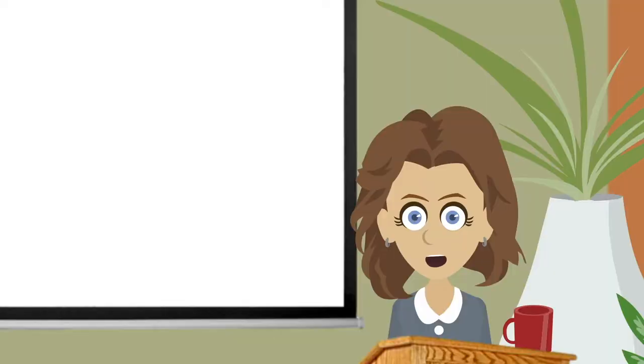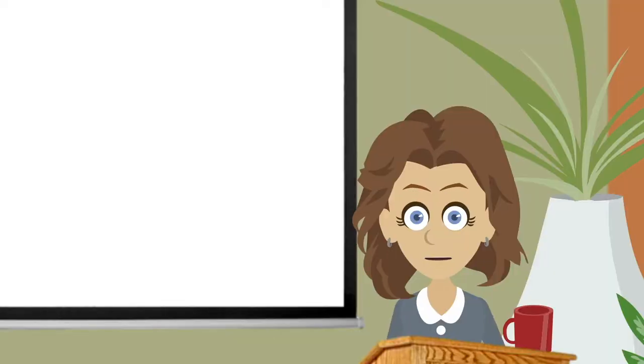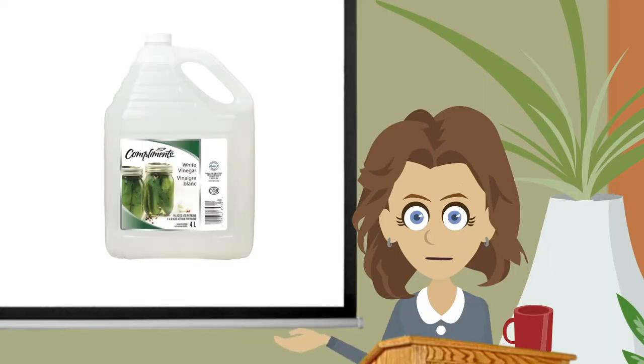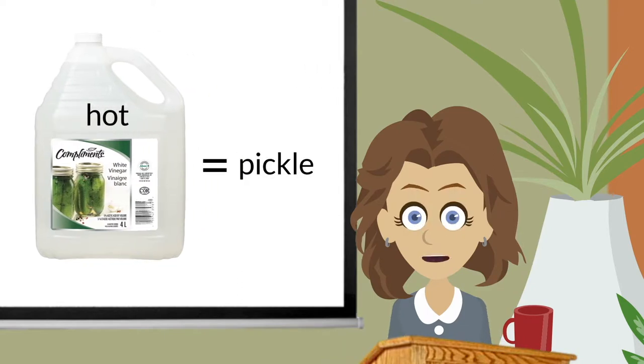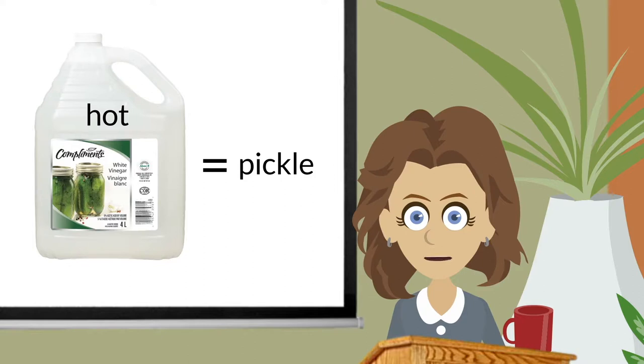Pickling? In the olden days, metalsmiths used to use hot vinegar to clean metal, which they called pickling. Vinegar is mildly acidic. Given enough time, hot vinegar will remove oxides and grease.